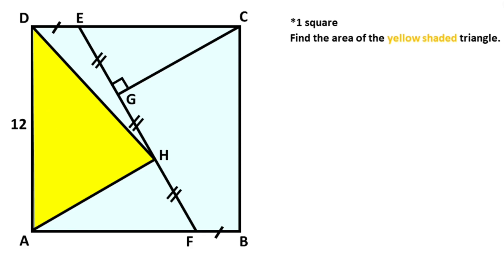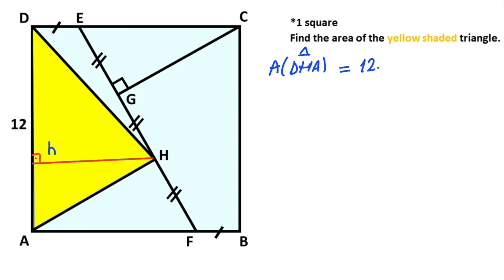First step: we know that to calculate the area of a triangle we need a height. So if we draw a height like this, let's call it h. The area of the triangle equals 12 times h over 2, so that is 6h. That means if we can calculate the value of h, we get the value of the area of the yellow shaded triangle.